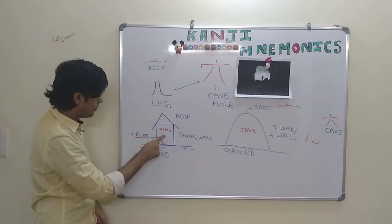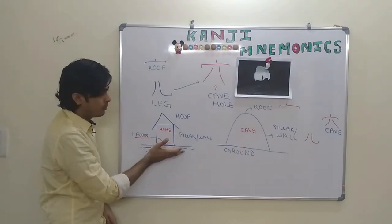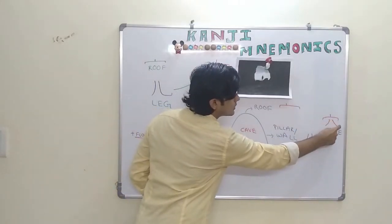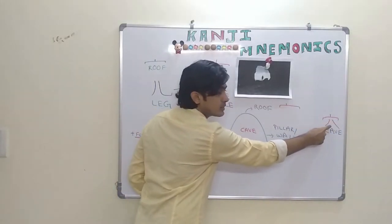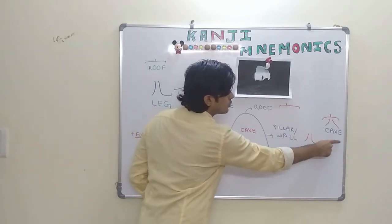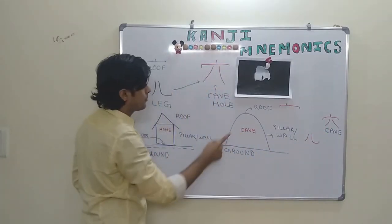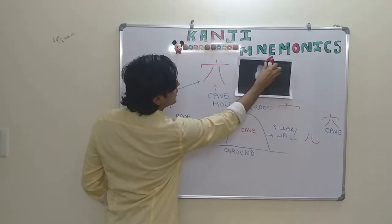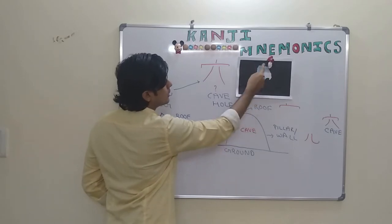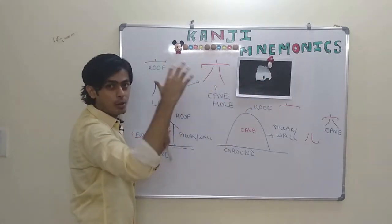As in this kanji, there is only this roof and this leg portion, that is the pillar or the support to the roof. So this gives a meaning of cave. And when you see this image from the inside of a cave to the outside world, this gives this image of a hole, a big hole. And that is the other second meaning of this kanji.